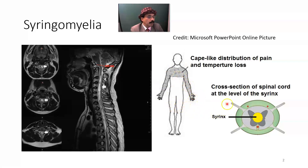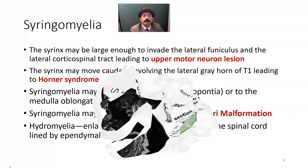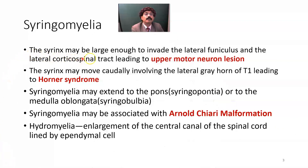It does not involve the lower limbs. In the cross-section of the spinal cord at the level of the syrinx, we can see the cavity in the grey matter, surrounded by white matter. The syrinx may be large enough to invade the lateral funiculus and lateral corticospinal tract, leading to an upper motor neuron lesion.